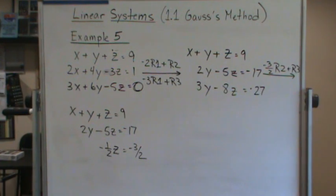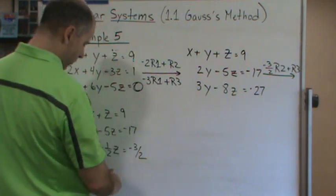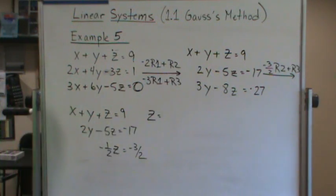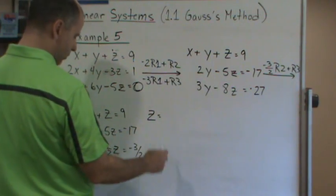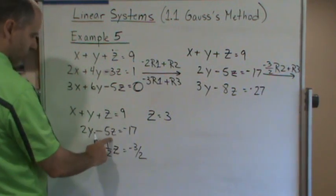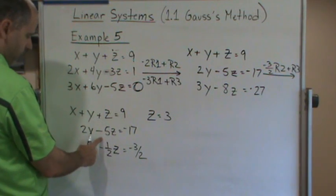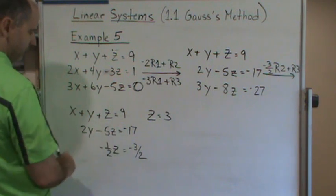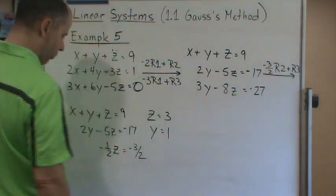Starting from the bottom equation with one variable: multiply both sides of negative one half z equals negative three halves by negative two, giving z equals 3. Now substitute z equals 3 into the second equation: 2y minus 5 times 3 equals negative 17, so 2y minus 15 equals negative 17. Adding 15 to both sides gives 2y equals negative 2, so y equals negative 1.